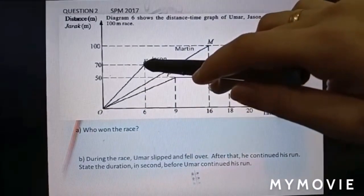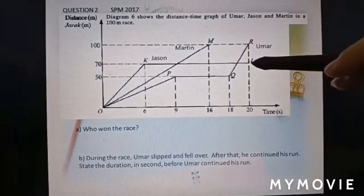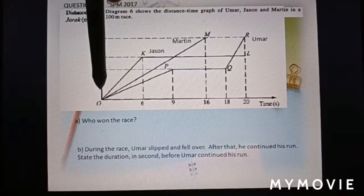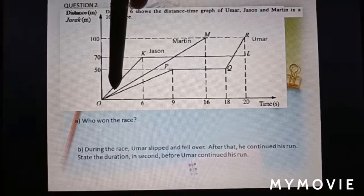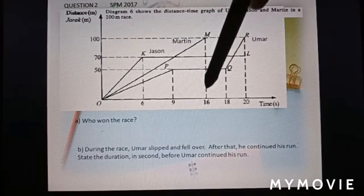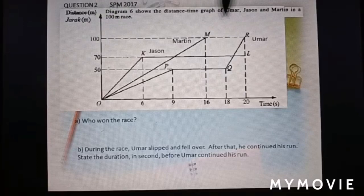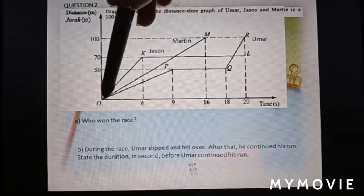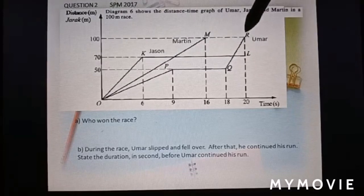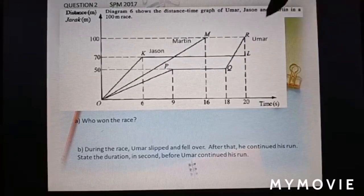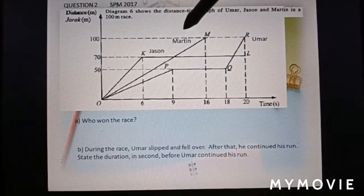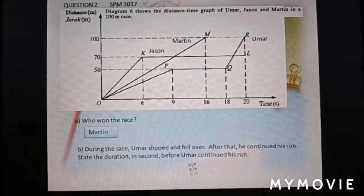At first, ran very fast. After that, stop. So, second one, Martin. From here until 100 meter in 16 seconds. Umar, from here, stop. After that, continue the journey. So, spend 20 seconds to reach 100 meter. So, from the diagram, of course, Martin won the race.